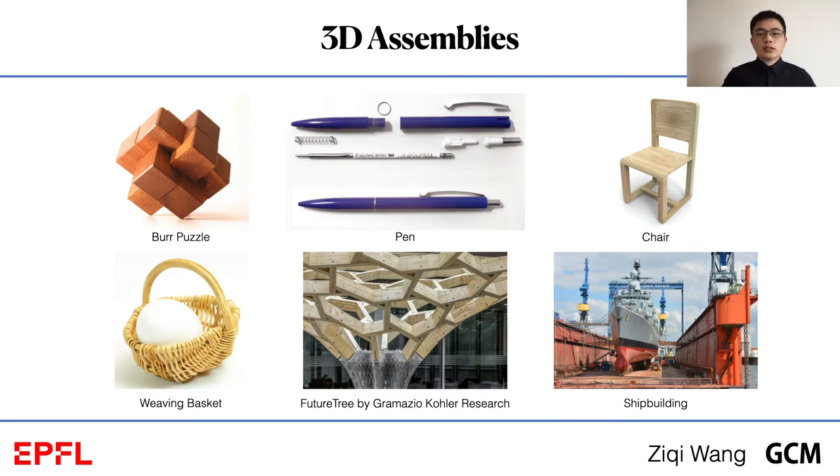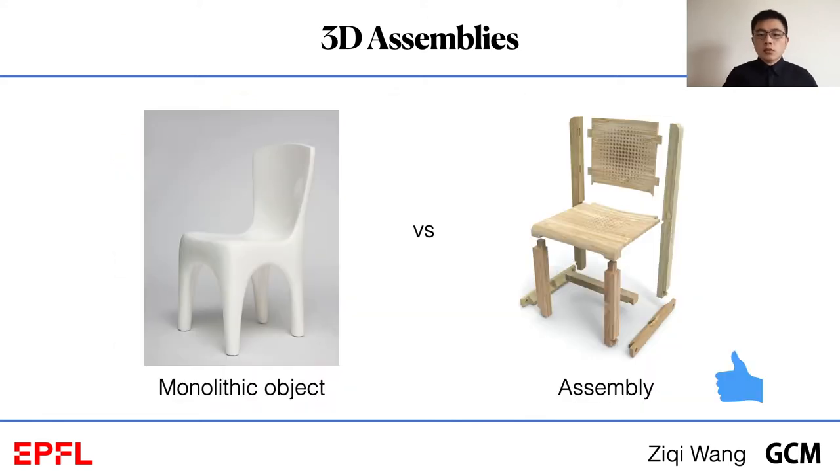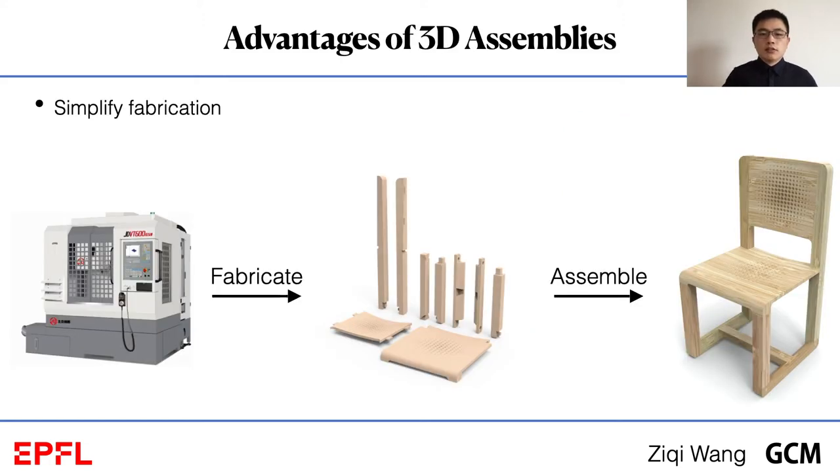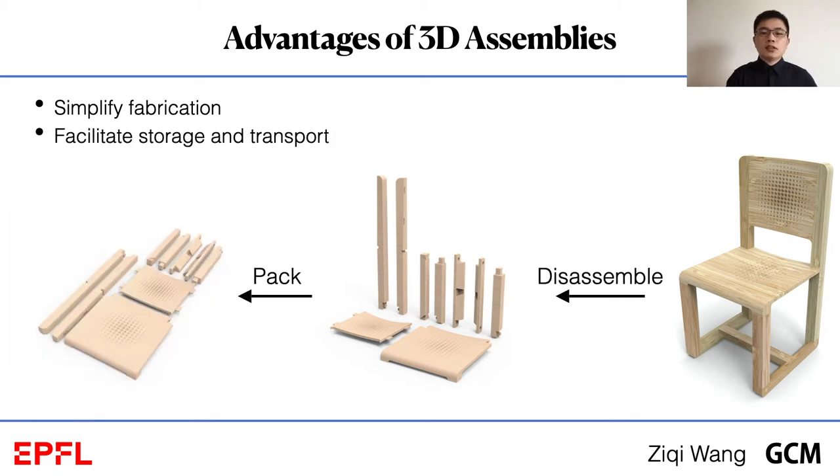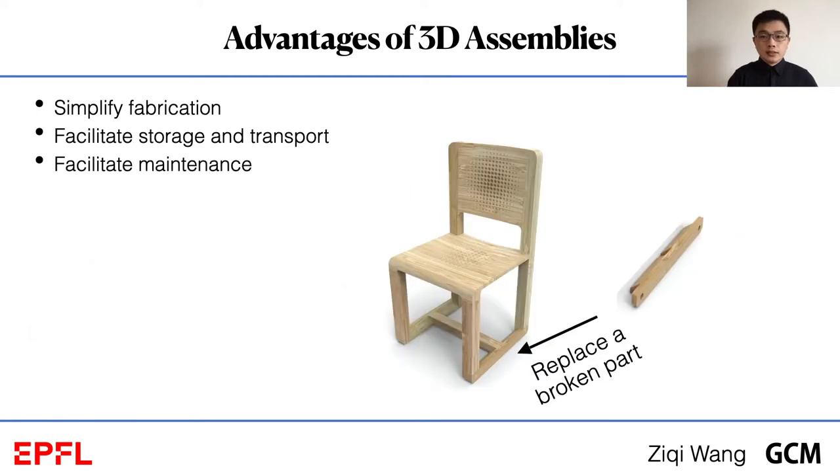An assembly refers to a collection of parts jointed together to achieve a specific form and functionality. Assemblies are used everywhere in our daily life. Compared with monolithic objects, assemblies come with several advantages. First, an assembly can be decomposed into parts with simple shapes which can be easily fabricated by digital machines. Second, an assembly can be disassembled and tightly packed into a box to save storage and transportation space. Third, during maintenance, only the broken parts of the assembly need to be replaced.